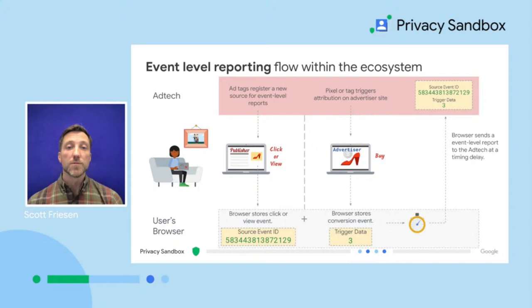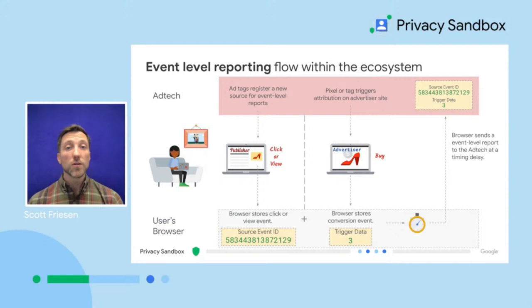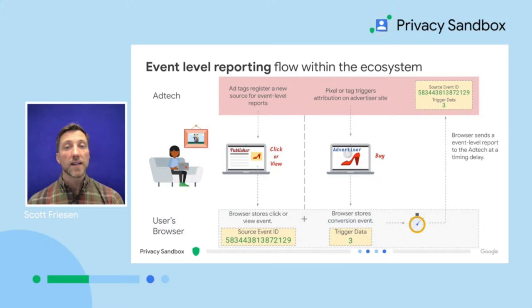Let's look at the Attribution Reporting flow in more detail, focusing on event-level reports. On a publisher's site with available ad inventory, the ad tech's ad tags register a new source for event-level reports and link a respective source ID to an event, like a view, click, or impression. This is stored in the browser. Later on, a pixel or tag triggers a respective conversion event on the advertiser's site and stores the trigger data equally in that browser. The browser then links both the source ID with the trigger data and sends an event-level report with a timing delay and noise to the ad tech.